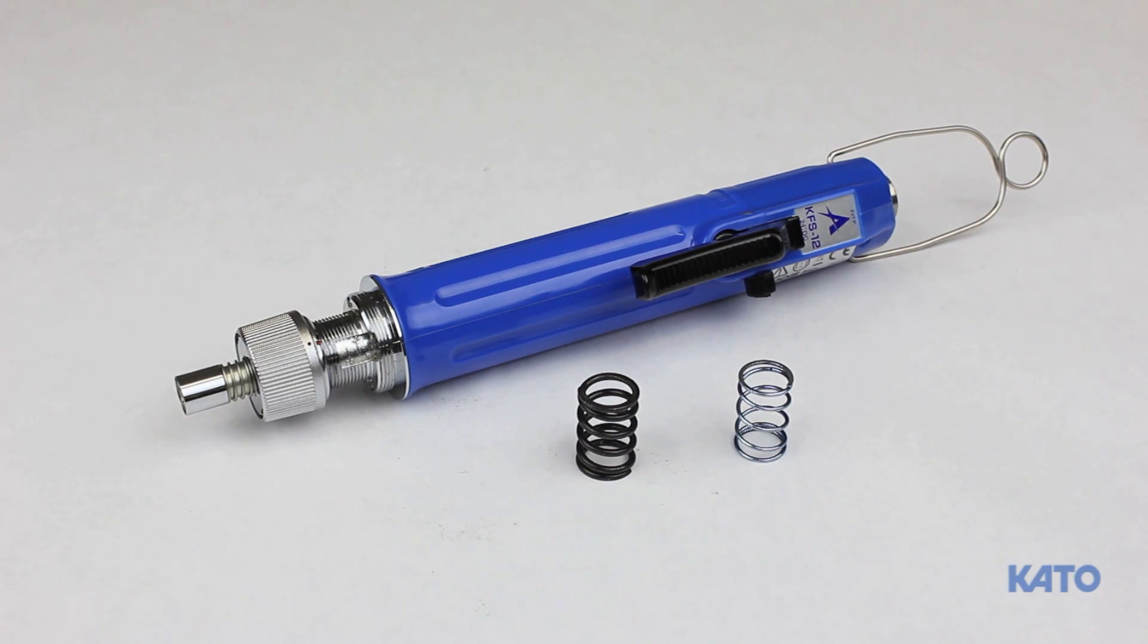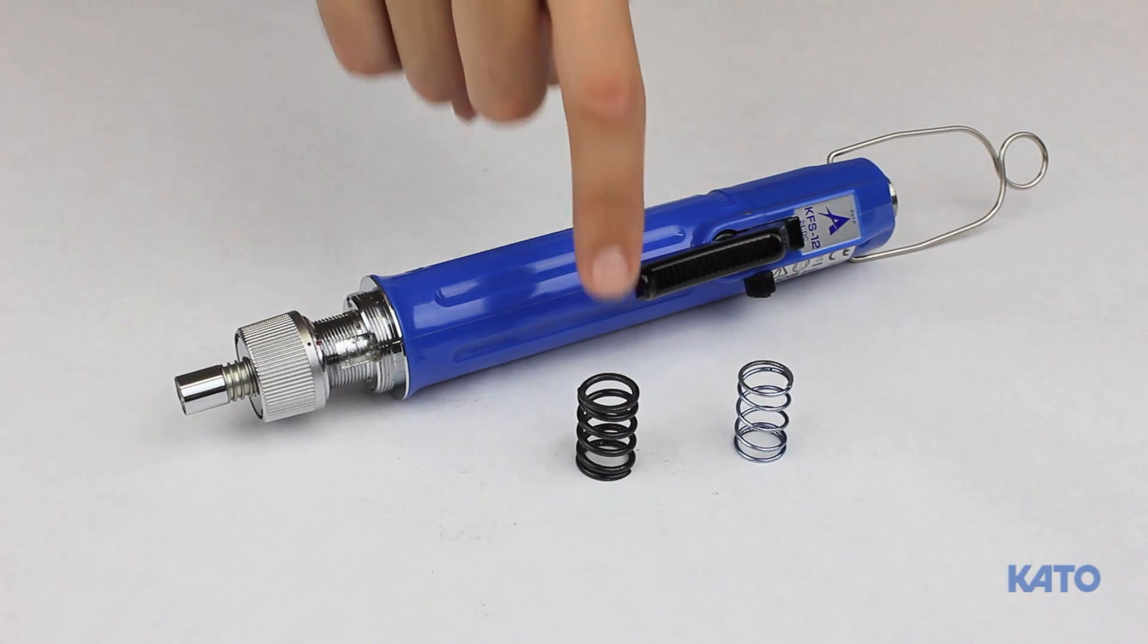the KFS 12 electric driver includes two torque limiting springs. The spring is located beneath the torque adjusting nut. Use the blue spring for smaller sizes, and the black spring for larger sizes.